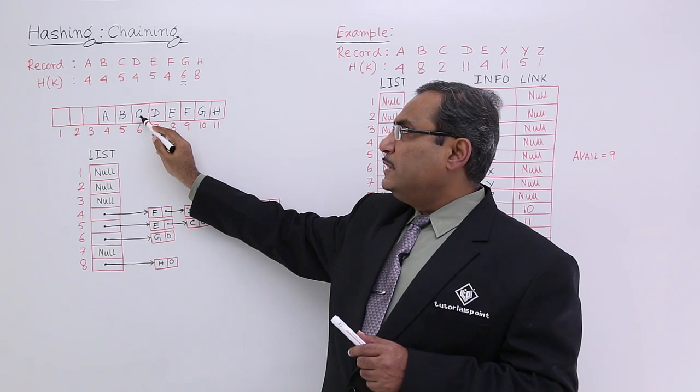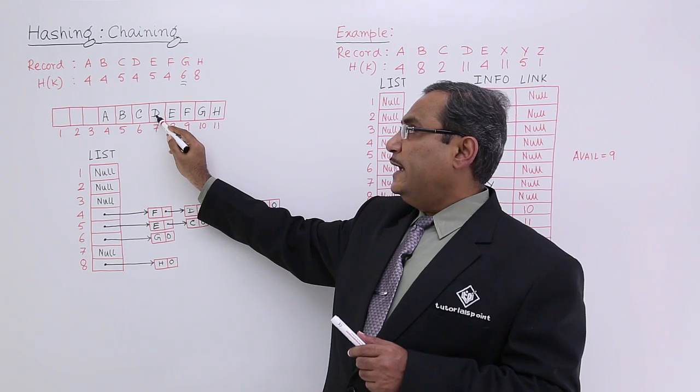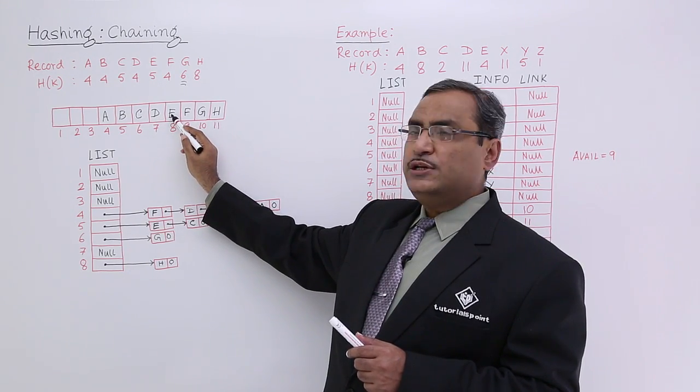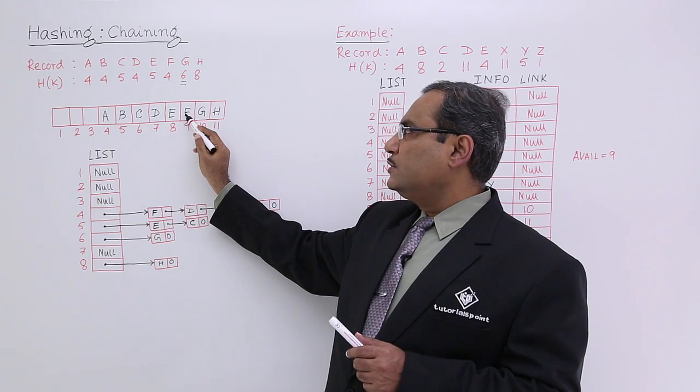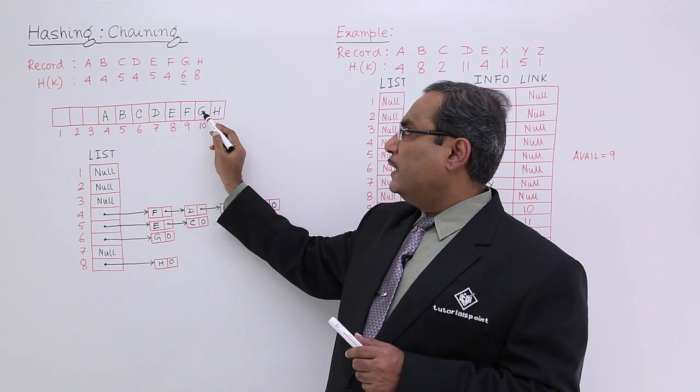So it is not G. But its H of K is 4. It is not G. Its H of K is 5. It is not G. But its H of K is 4. But it is G. So successful searching has been obtained.